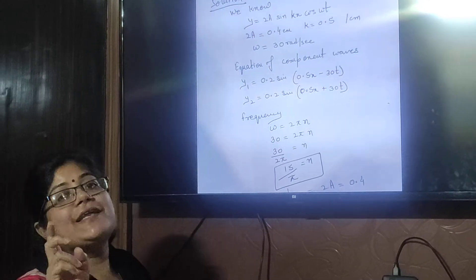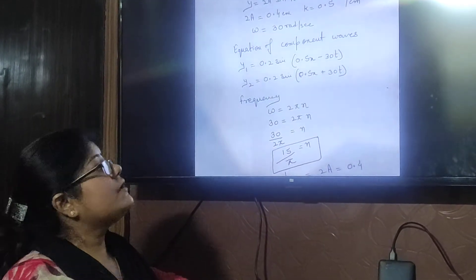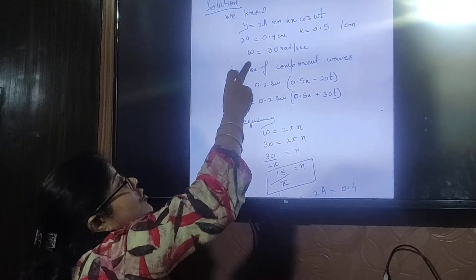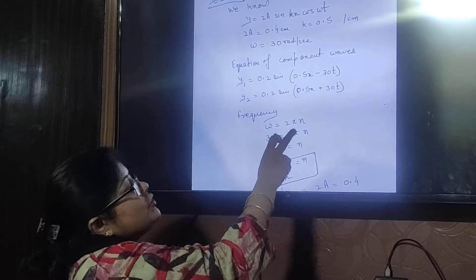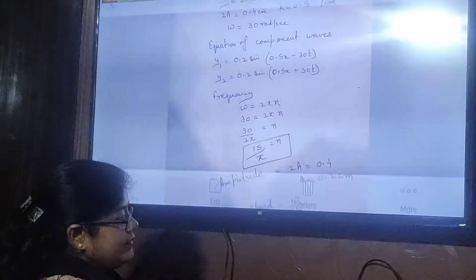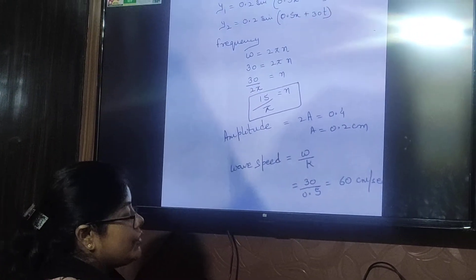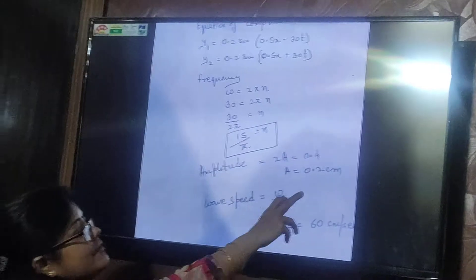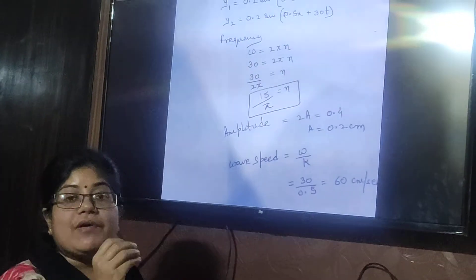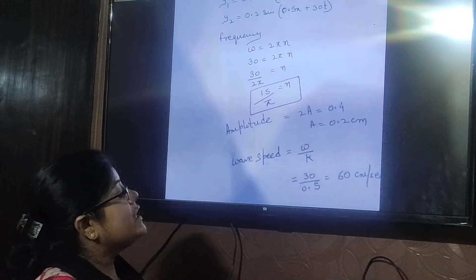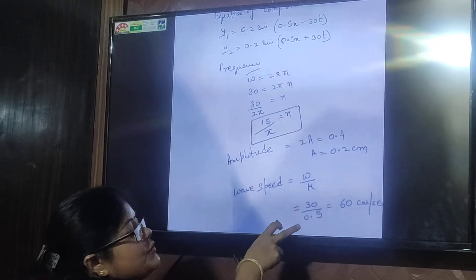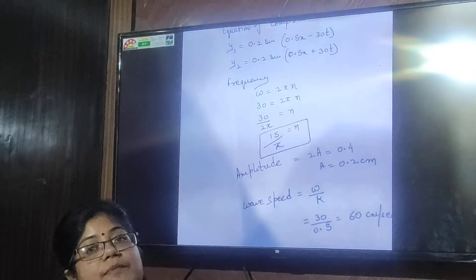The component waves are: y₁ = 0.2 sin(0.5x − 30t) traveling in the positive x-direction, and y₂ = 0.2 sin(0.5x + 30t) traveling in the negative x-direction. For frequency: omega = 2π·n, so n = 30/(2π) = 15/π Hz. Amplitude is 2a = 0.4, so a = 0.2 cm. Wave speed = omega/k = 30/0.5 = 60 cm/s.